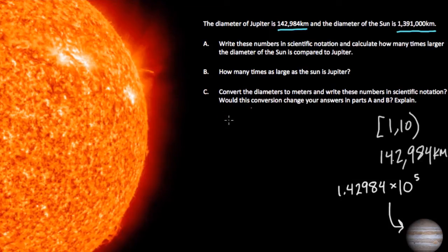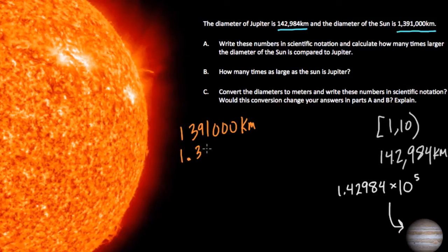For the sun, we can follow a similar strategy. We have 1,391,000 kilometers. And we want to rewrite this so that the first number is between 1 and 10, not equal to 10. If I put a decimal between the 1 and the 3, I get just that. 1.391, that's a number between 1 and 10.